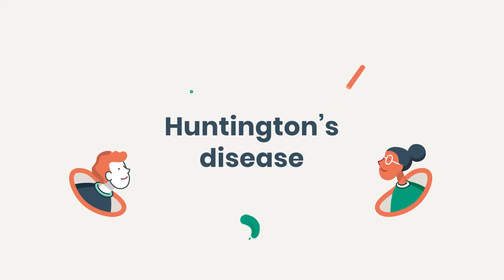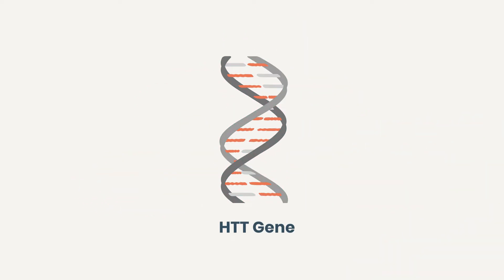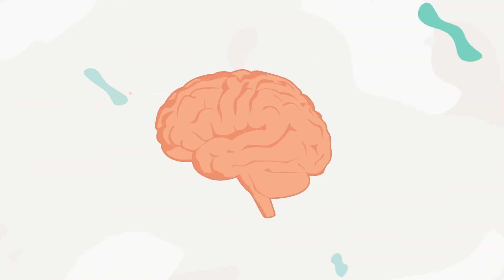Huntington's disease is a genetic brain disorder that has a widespread effect on how our bodies function. Mutations in the Huntington or HTT gene causes a progressive breakdown of nerve cells or neurons located in the brain.